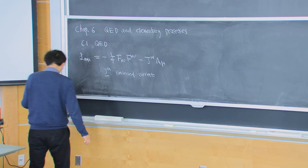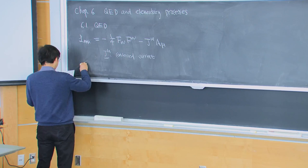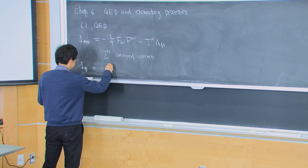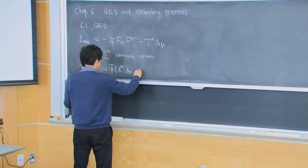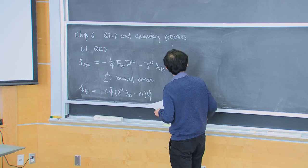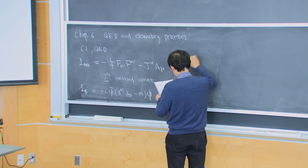So now the question is: what provides this J_mu? Let's introduce some other fields. Now imagine we have some Dirac fermions — a fermionic field with its Lagrangian. This is the Lagrangian for the Dirac fermion.